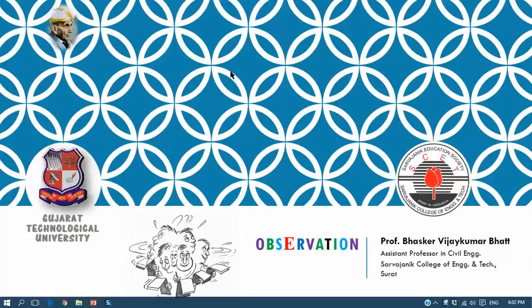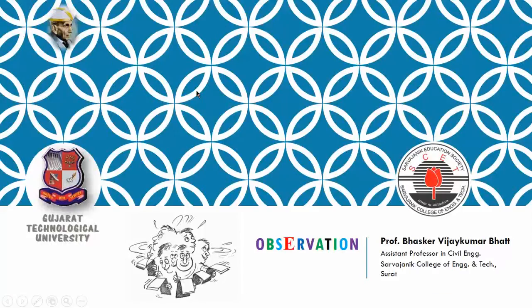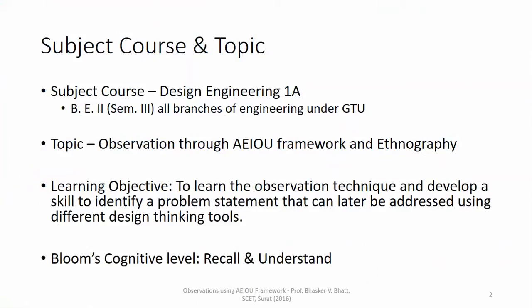Hello, I am Baskar. We are going to talk about observations in the subject of Design Engineering 1A, offered across all branches of engineering in semester three of the second year of bachelor's. The objective today is to learn the observation technique and develop a skill to identify a problem statement in the form of clues that can later be addressed using different design thinking tools such as ideation canvas, empathy mapping, product development, designing of experiments, and so on.